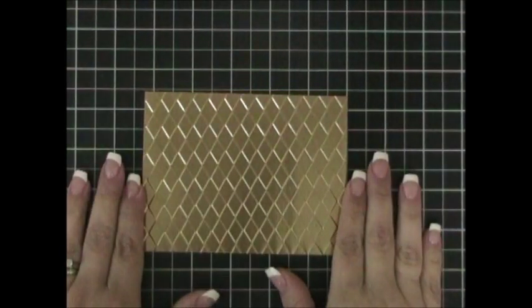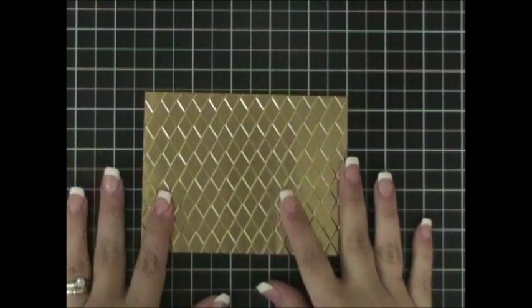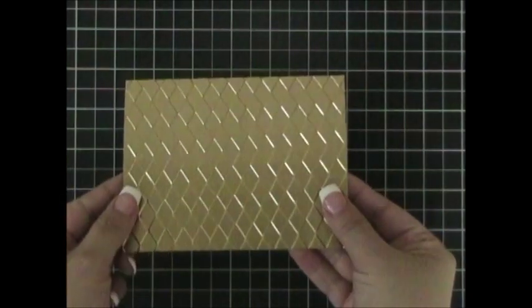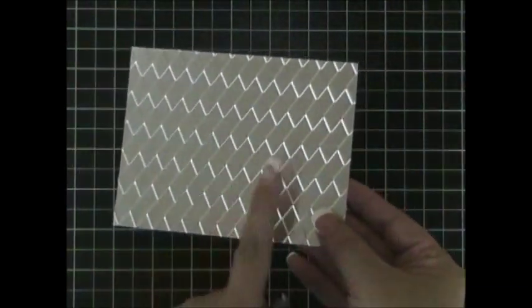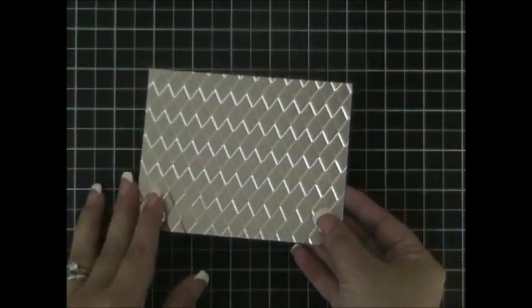Voila! Here is my metal embossed piece. Isn't that not just beautiful? As you can see, you can see the texture on it. This is the gold side and this is the aluminum side.